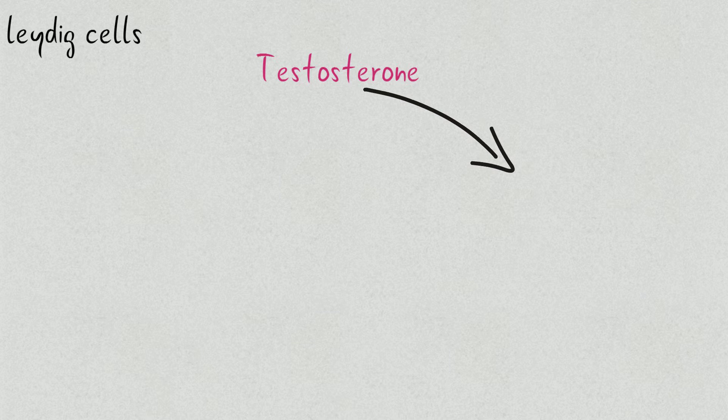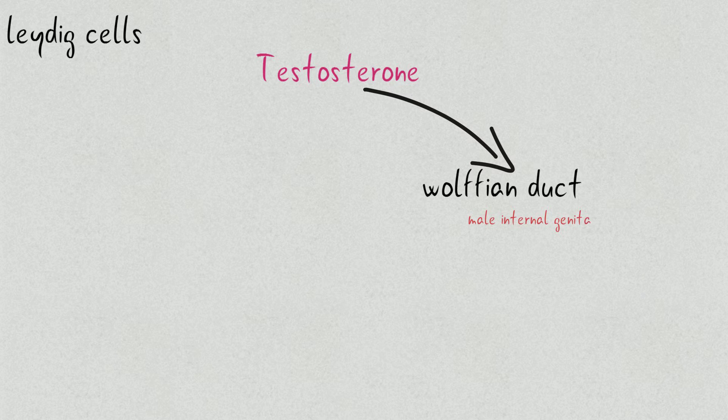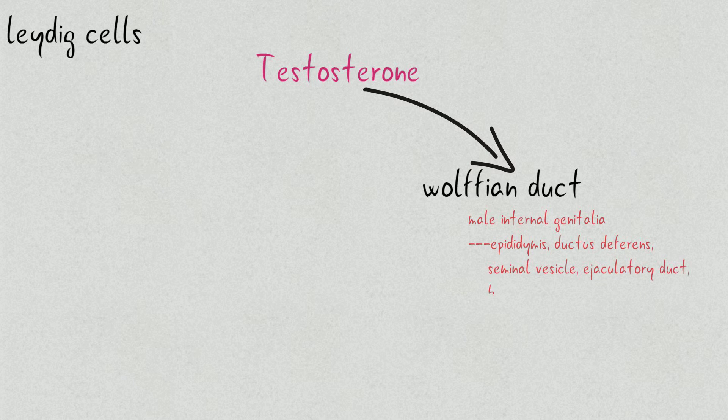Leydig cells secrete testosterone, which during the 6-8th week of gestation helps form the Wolffian duct. This Wolffian duct is responsible for the formation of male internal genital organs including seminal vesicles, vas deferens, efferent ducts, epididymis, and bulbourethral glands.